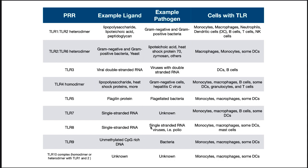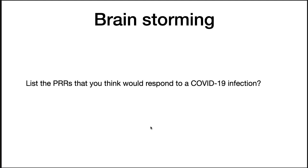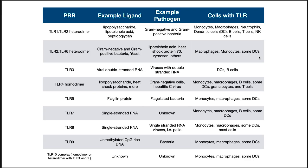PRRs are proteins that recognize common structures found in microorganisms. Which PRRs would respond to a COVID-19 infection? Since COVID-19 is a coronavirus, it has single-stranded positive RNA. Looking at the table, TLR8 and TLR7 are the ones that respond to single-stranded RNA, so these are probably the PRRs that would recognize the coronavirus.